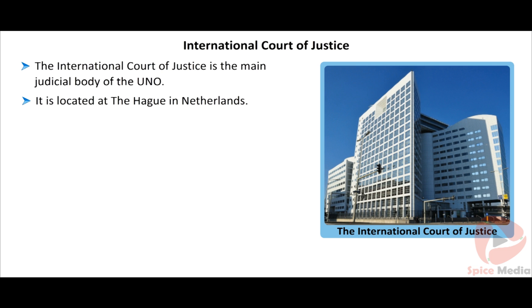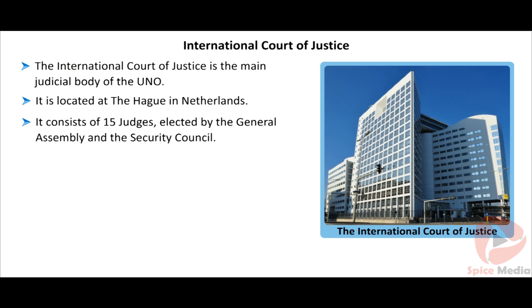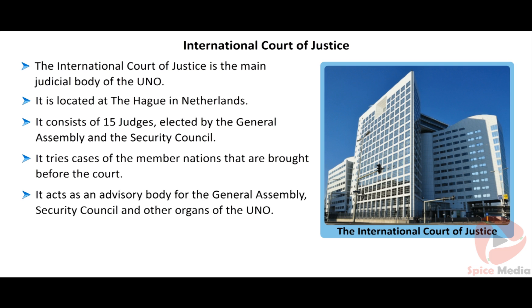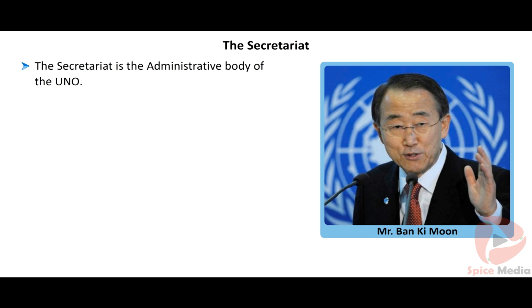The International Court of Justice is the main judicial body of the UNO. It is located at The Hague in the Netherlands. It consists of 15 judges elected by the General Assembly and the Security Council. It tries cases of other member nations brought before the court, and acts as an advisory body for the General Assembly, Security Council, and other organs of the UNO.